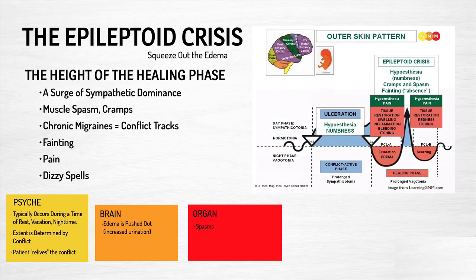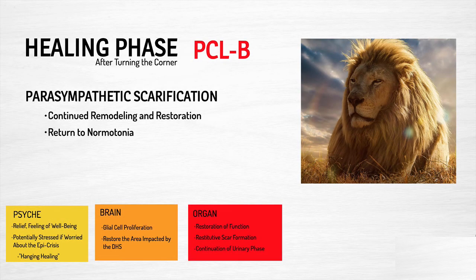The epileptoid crisis is the height of the healing phase — a surge of sympathetic dominance. For the cerebral cortex, this is an outer skin pattern, and there tend to be more unique symptoms: possible fainting, feeling out of it, and dizzy spells accompanying the epileptoid crisis. Then we want to get to healing phase B — the parasympathetic scarification where everything returns to normal, the duct is open again, and there is just normal function of the prostatic duct or ejaculatory duct.